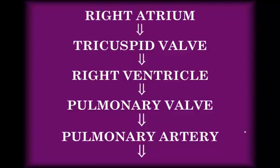The next place that the blood goes is the right atrium. From the right atrium it goes through a valve — valves control the flow of blood in the heart and in the body — so it's going through the tricuspid valve. It's an AV valve because it's between an atrium and a ventricle, and then the blood is going into the right ventricle.